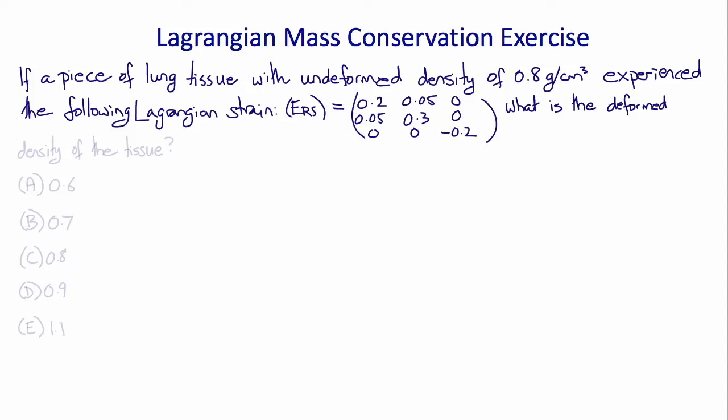Is it A: 0.6, B: 0.7, C: 0.8, D: 0.9, or E: 1.1?